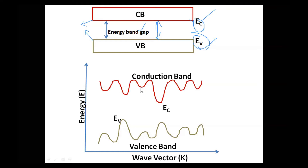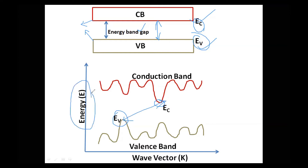In this real situation in materials, the bottom of the conduction band is at this point, and the top of the valence band is at this point. This is the lowest point for the conduction band and the highest point for the valence band. These two are represented in an E-K diagram, meaning we take energy on the y-axis and wave vector K on the x-axis.